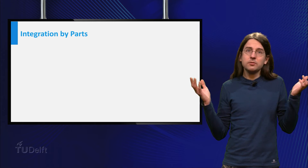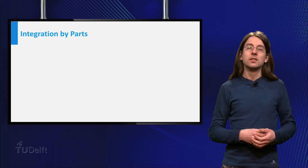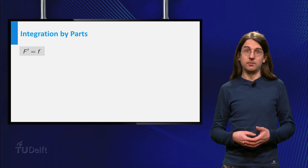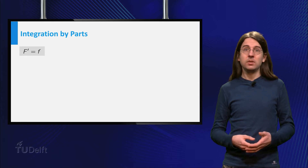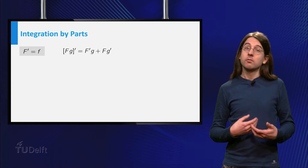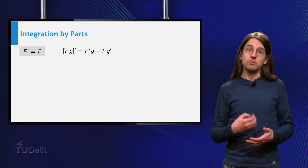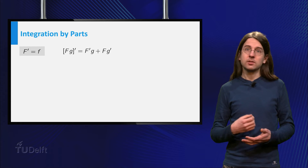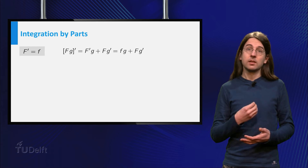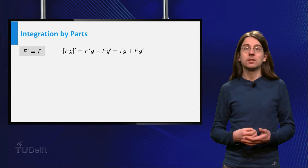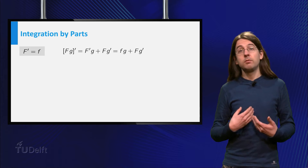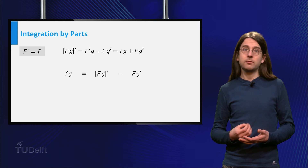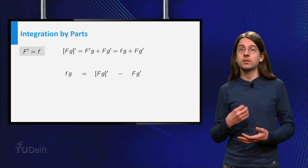Can you use a trick like this for arbitrary functions? Yes! To see how, it is convenient to write capital F for a primitive function of small f — that is, capital F prime equals little f. We now write down the product rule as: the derivative of capital F times G equals little f times G plus capital F times G prime. We can rearrange this to: little f times G equals the derivative of capital F times G minus capital F times G prime.